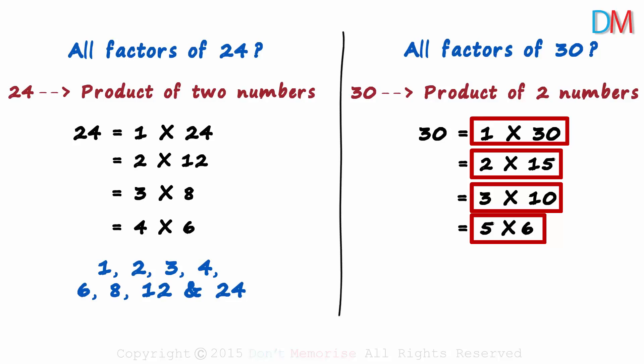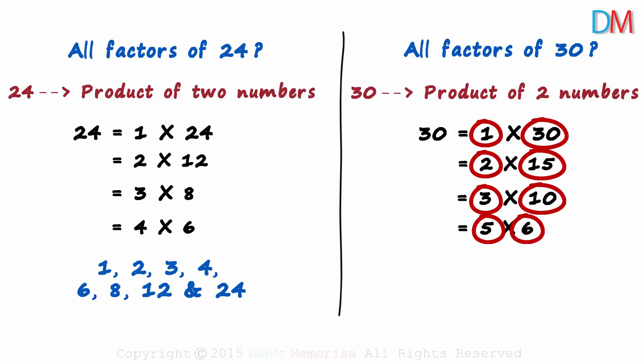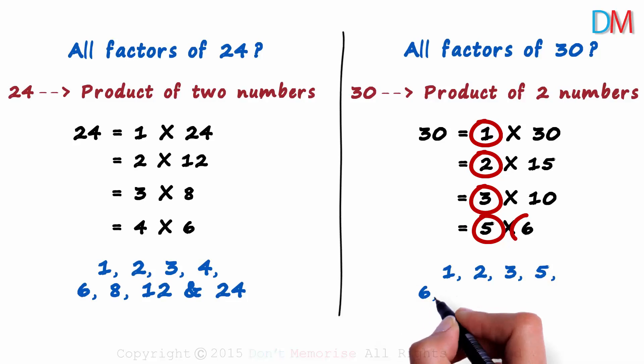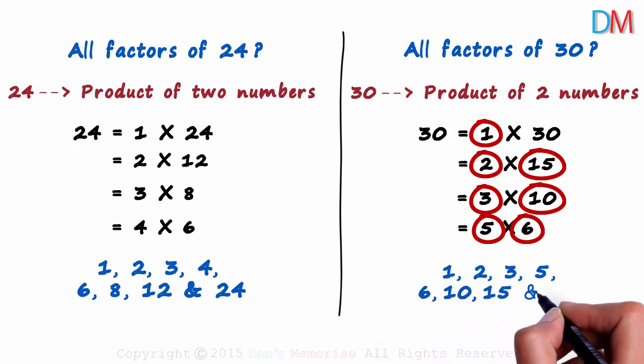These are the only four ways in which we can write 30 as a product of two numbers. So we can say that these eight numbers individually are the factors of 30. The factors are 1, 2, 3, 5, 6, 10, 15 and 30.